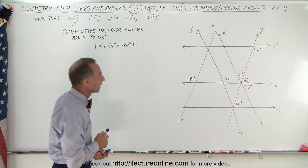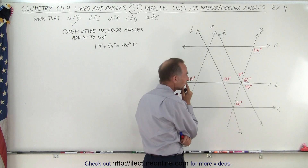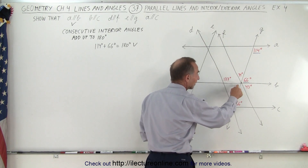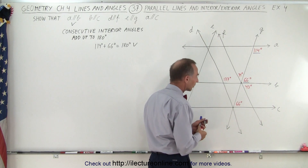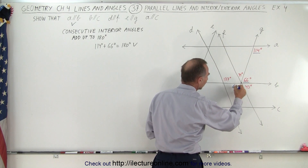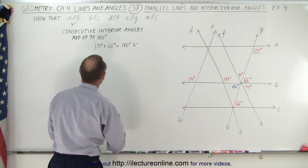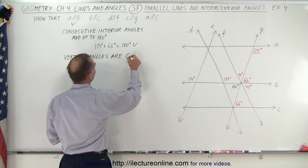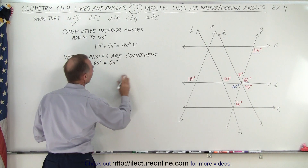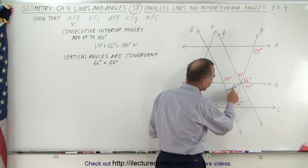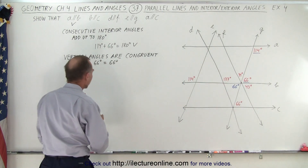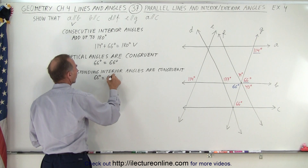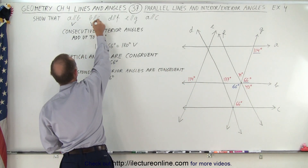Next, are lines B and C parallel? This angle and this angle are consecutive interior angles. I also know that this angle is opposite to this angle, making them vertical angles, which means I can determine the measure of this angle. It is also 66 degrees, because vertical angles are congruent. So 66 degrees equals 66 degrees. Now we have two corresponding interior angles, and corresponding interior angles are congruent — 66 degrees equals 66 degrees — so we conclude that B is parallel to C.